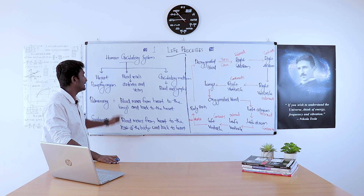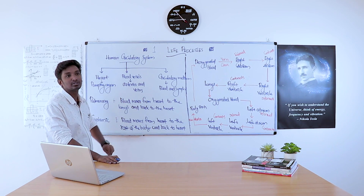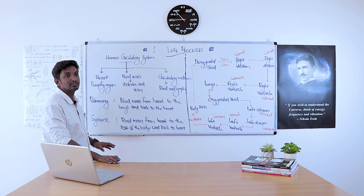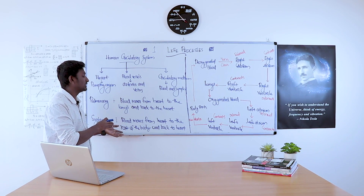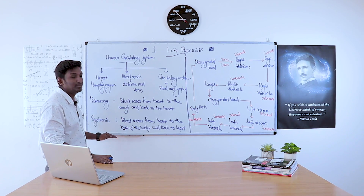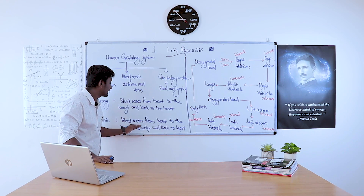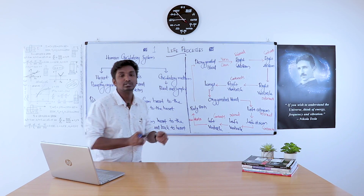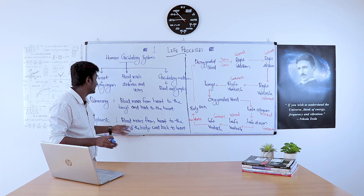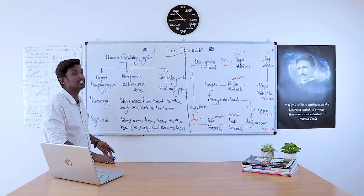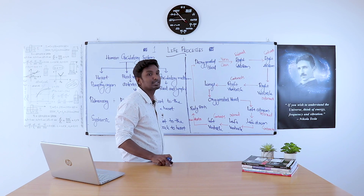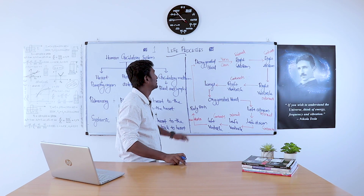Pulmonary circulation means blood moves from the heart to the lungs and back to the heart. In systemic circulation, blood moves from the heart to the rest of the body and back to the heart. This flow chart shows the blood circulation in the human body.